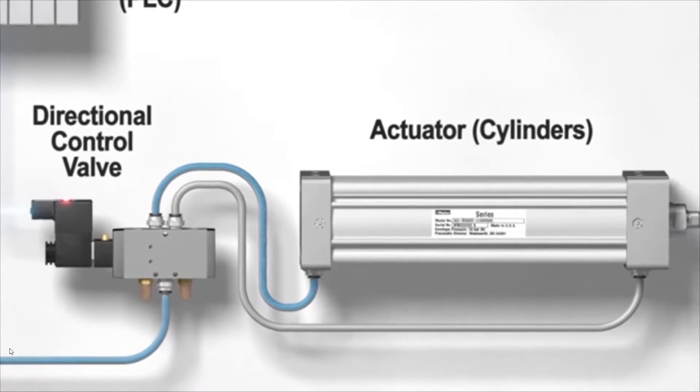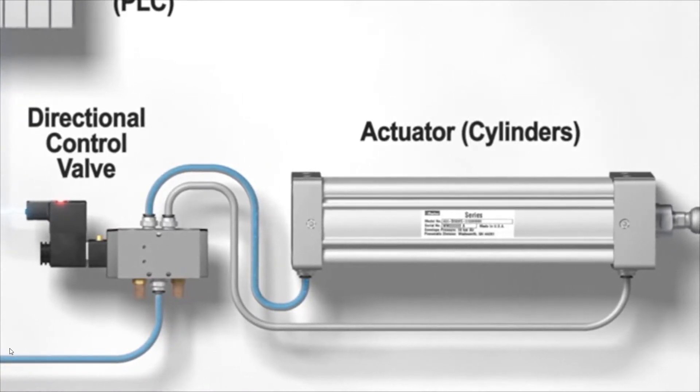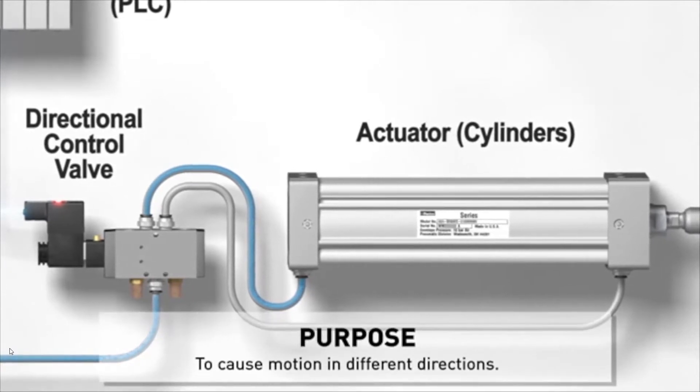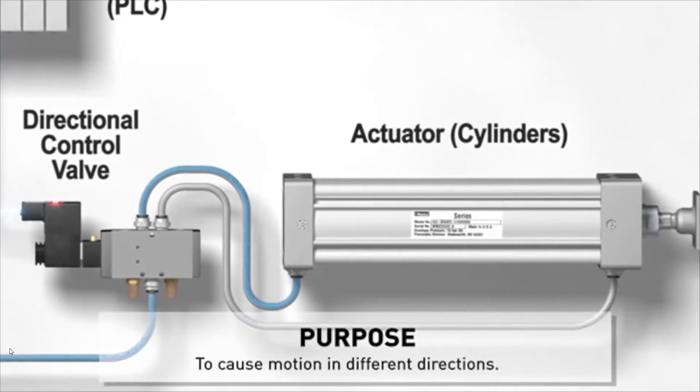The next component in the system, the actuator, will allow us to do some useful work with the air we compressed, cleaned and redirected. In most applications, the purpose of changing the direction of the compressed air with the valve is to cause motion in different directions.